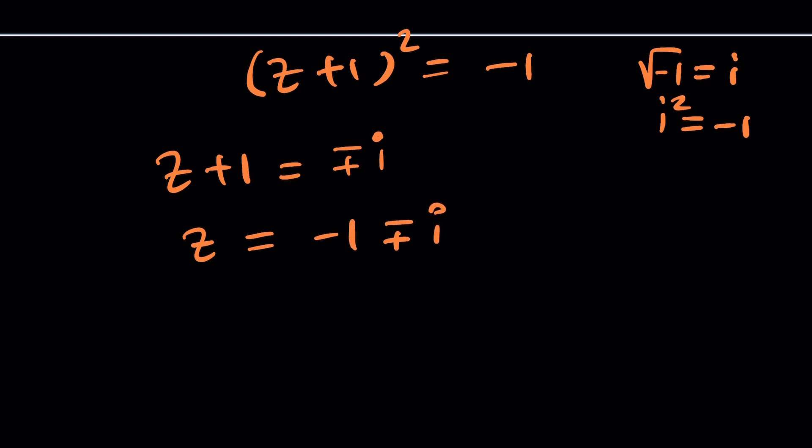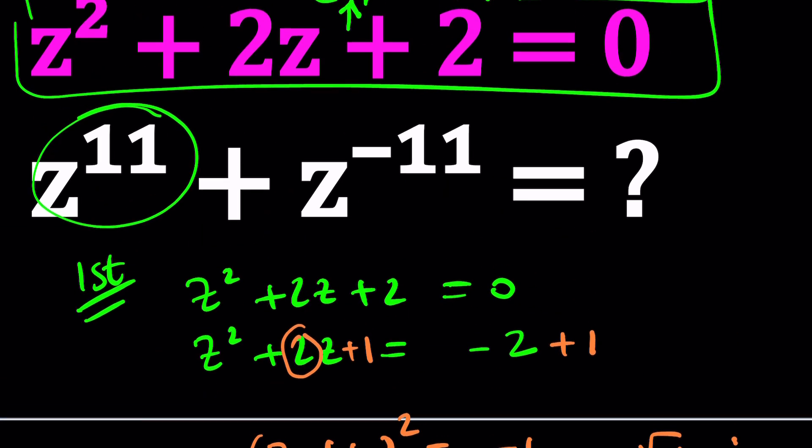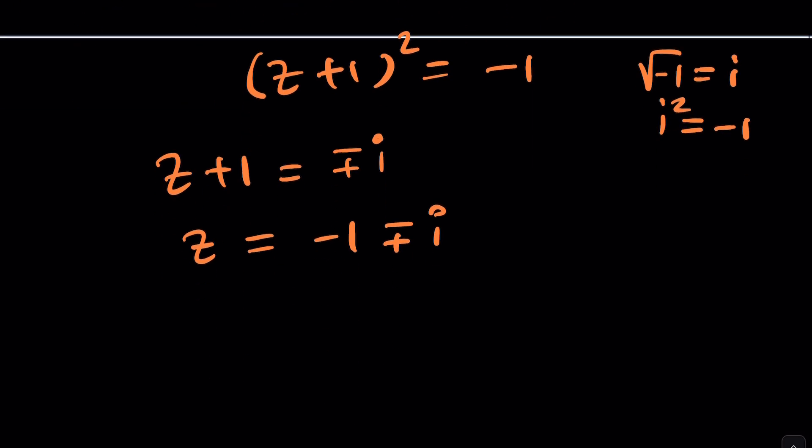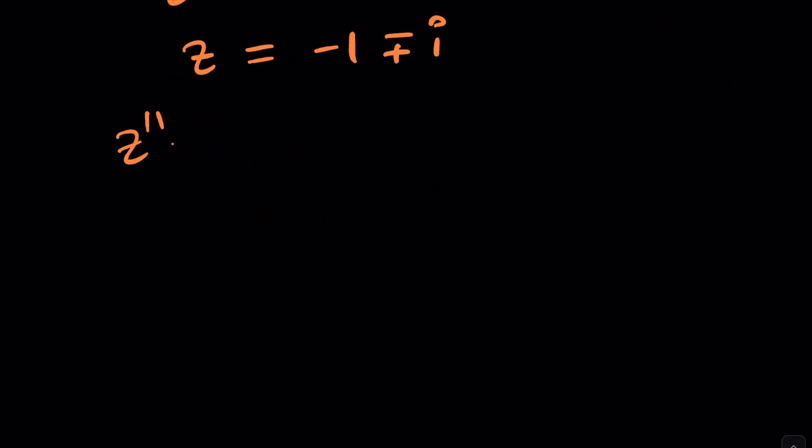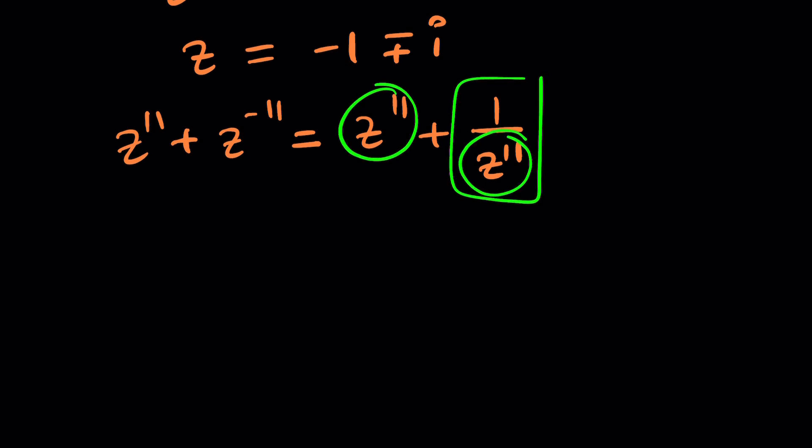Case closed? Not really. Because you're supposed to evaluate z to the 11 plus z to the power negative 11. Well, z to the power negative 11 is no big deal. Once we can evaluate this, we just have to find the reciprocal, right? Because this can be written as follows. z to the power 11 plus z to the power negative 11 can be written as z to the power 11 plus 1 over z to the power 11. So if you know what this is, you know what this is, so you know what this is. And now you know the whole thing. Makes sense? Yes.